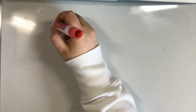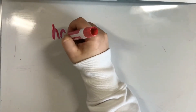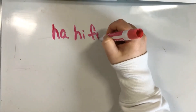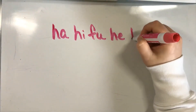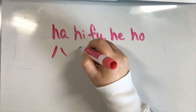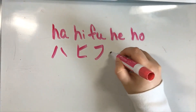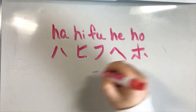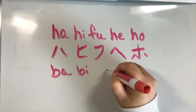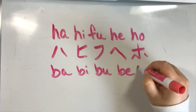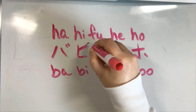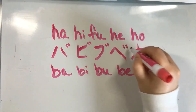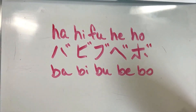As you may remember, the next characters are the h characters. Depending on whether we add a quotation sign or a degree sign, we'll change the sound. So let's start with changing it with the quotes. We have ha, hi, fu, he, ho — we're going to change it to ba, bi, bu, be, bo. That's how you change it from an h character to a b character.